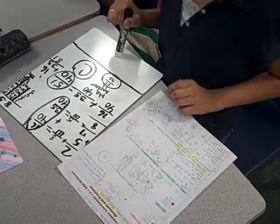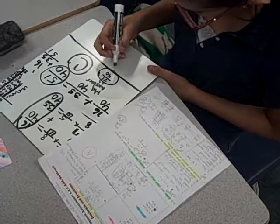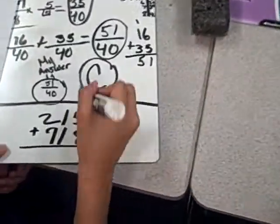Go ahead. I think for A, they just lined them up first and then they just added.